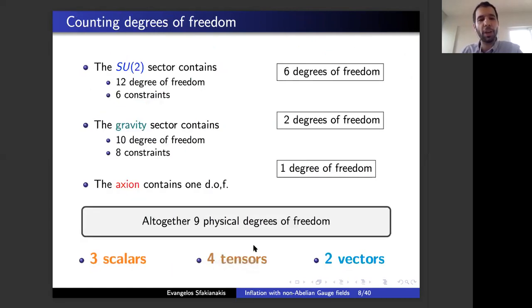If we count the degrees of freedom of this theory, we get six degrees of freedom from the SU(2) sector, two degrees of freedom from gravity (the gravitational waves), and one degree of freedom from the axion. So altogether, this is a theory with nine degrees of freedom, of which three scalars, four tensors, and two vectors. I'm not going to talk about the vectors at all. I'm going to talk about the scalars and the tensors.